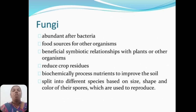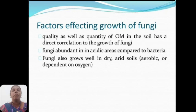Fungi are abundant after bacteria, serving as food sources for other microorganisms. They form beneficial symbiotic relationships with plants or other organisms, reduce crop residue, and biochemically process nutrition to improve the soil. They are split into different species based on size, shape, and color of the spores used to reproduce. The quality and quantity of atmospheric microorganisms in the soil has a direct correlation to the growth of fungi, and fungi are more abundant in acidic areas compared to bacteria.